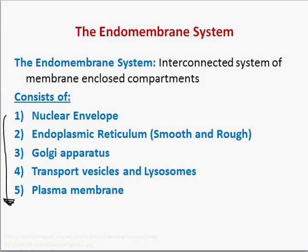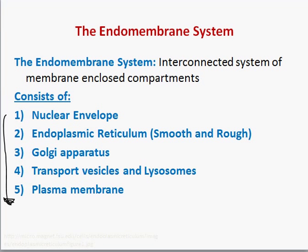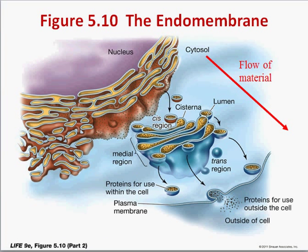The first stop is the nucleus and the nuclear envelope, then we have the RER, the smooth ER, the Golgi, transport vesicles, lysosomes, and the plasma membrane. This is how proteins are synthesized and packaged for transportation throughout the cell or for excretion out of the cell.